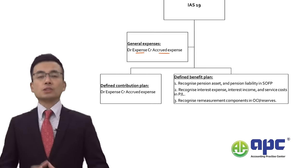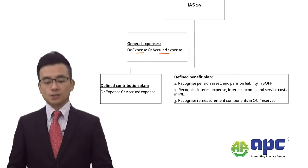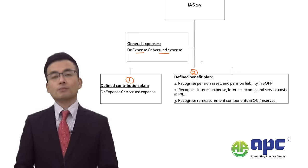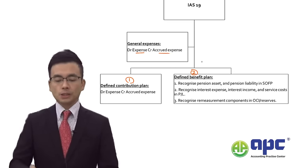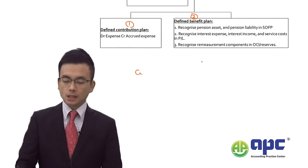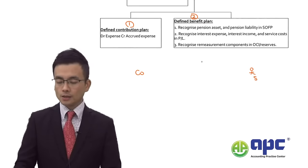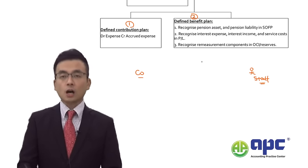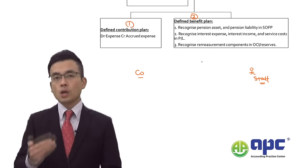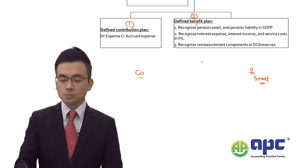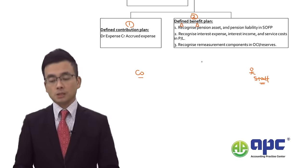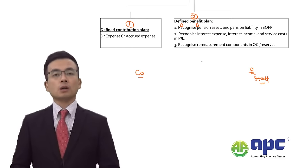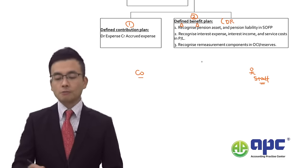The pension plan can be divided into defined contribution or defined benefit. For the defined benefit (DB) scheme, the company promises the staff a fixed amount — for example, $5 million — when they retire. That benefit is defined, fixed, and promised by the company.